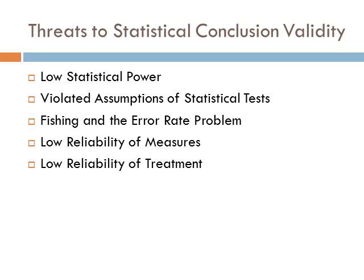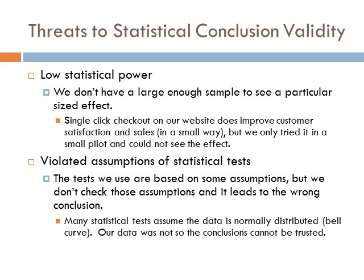The five threats we'll talk about are: low statistical power, violating the assumptions of the tests, fishing and expanding our error rate, low reliability of measures, and low reliability. The first one — low statistical power — most often comes from not having a large enough sample size to see a particular sized effect. If we're looking for a 10% improvement in depression, we can figure out ahead of time how many people we need to detect an effect of that size.